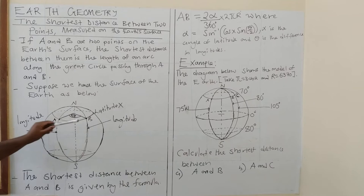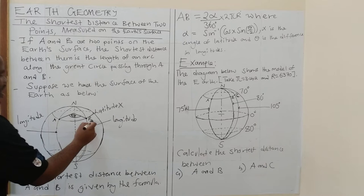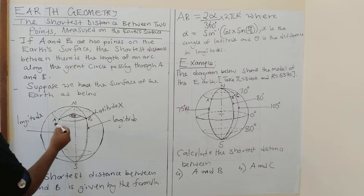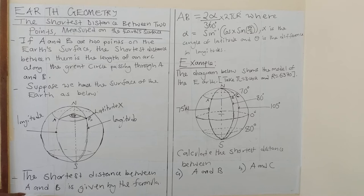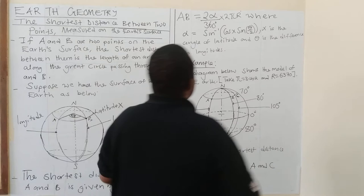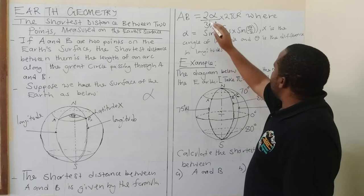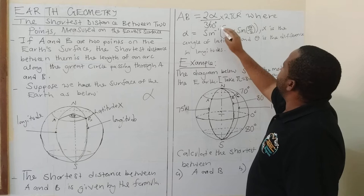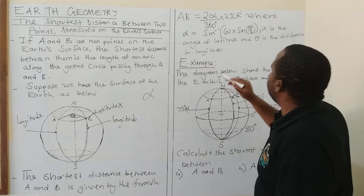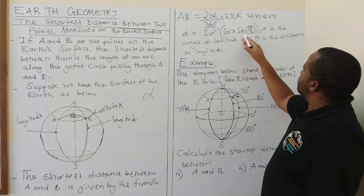We know how to find the distance between two points, but what is the shortest? We are saying if I am dealing with A and B, the shortest distance — let's call it AB — is given by the formula: AB is equal to 2 times alpha over 360 degrees, times 2 pi R. Where alpha is sine inverse of cos x times sine of theta over 2. What is x? x is the latitude.